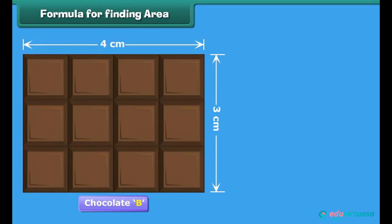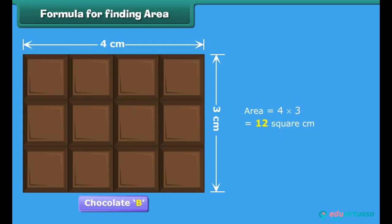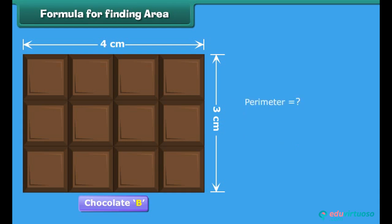We found the area of chocolate B by counting the total number of squares on it. Alternatively, we can calculate the area by multiplying the number of squares along the length with the number of squares along its width. Thus, area is equal to length multiplied by width. The perimeter is equal to twice the sum of its length and width. The perimeter of chocolate B is equal to 14 centimeters.